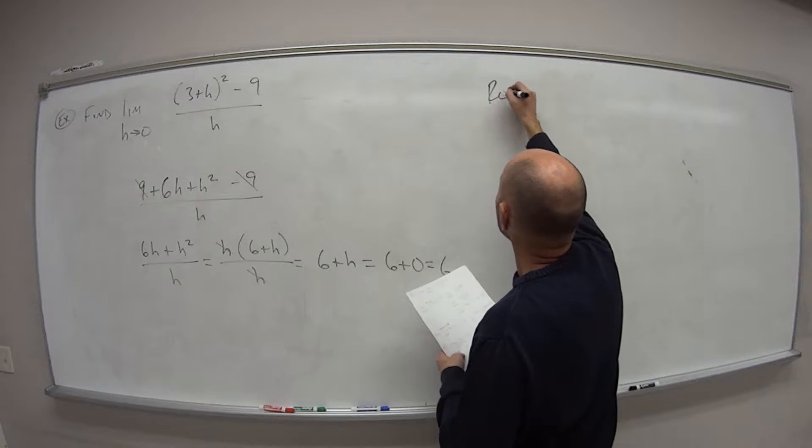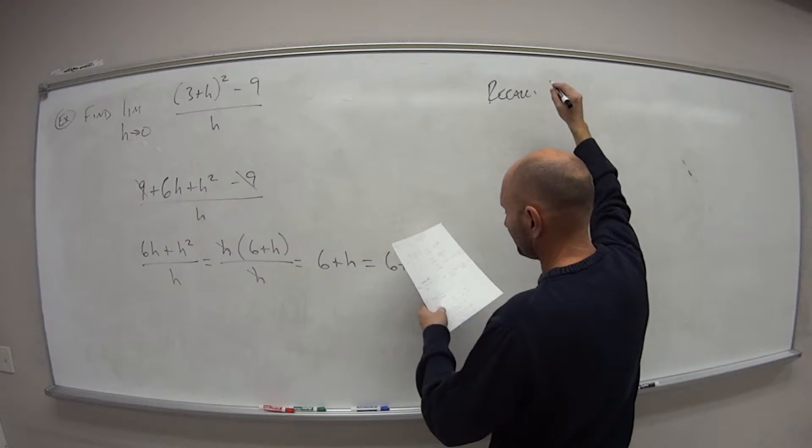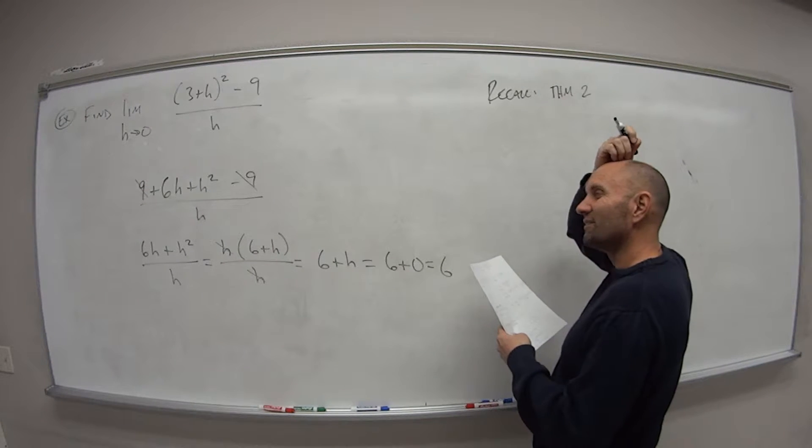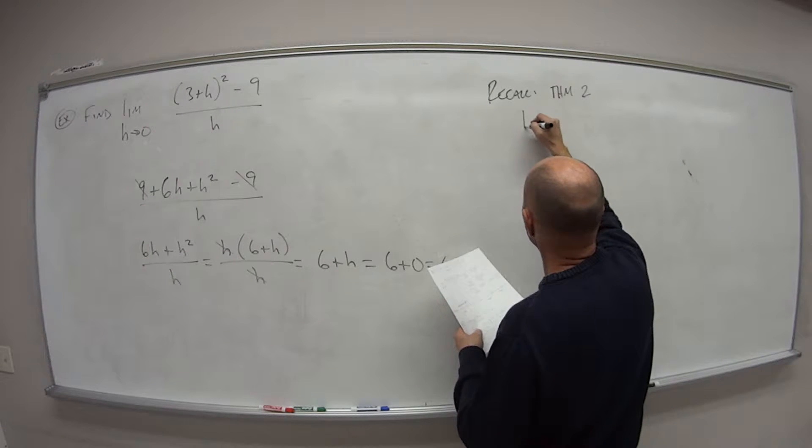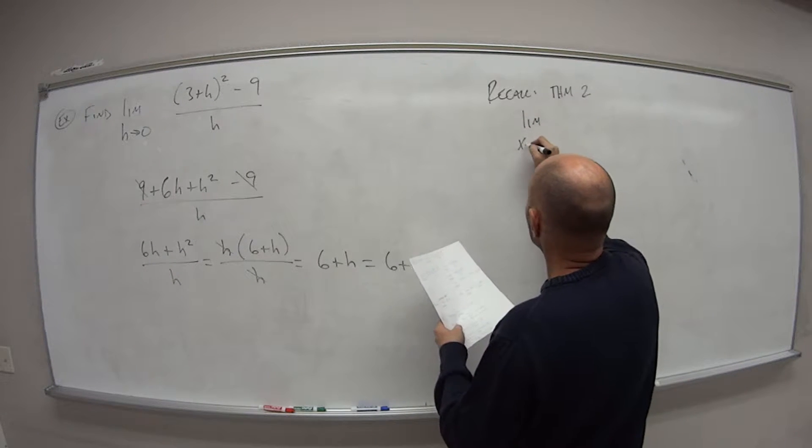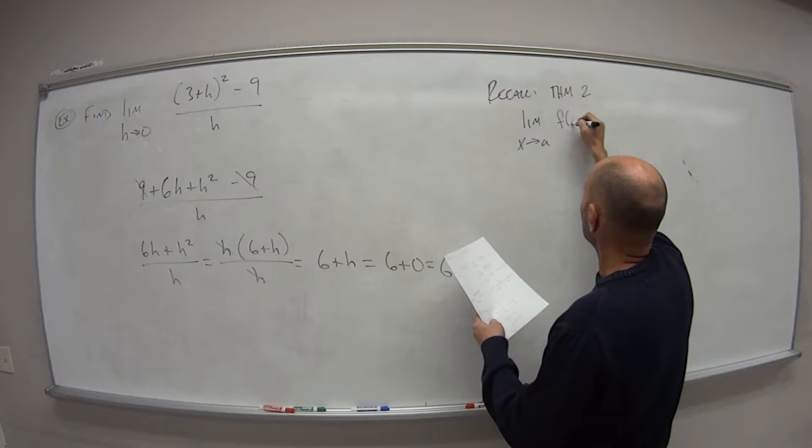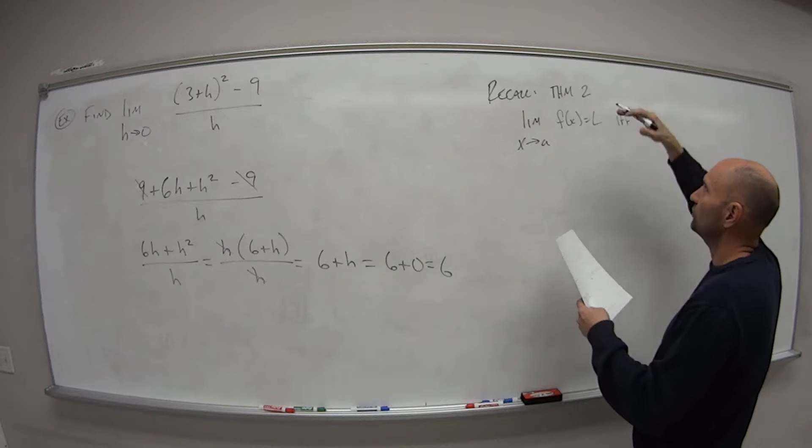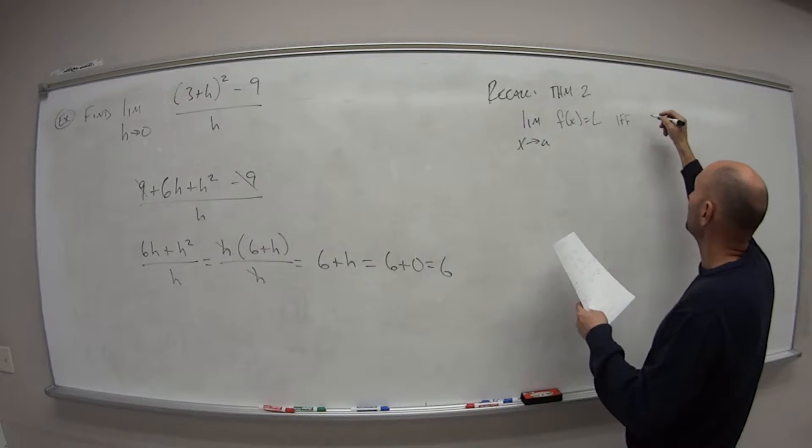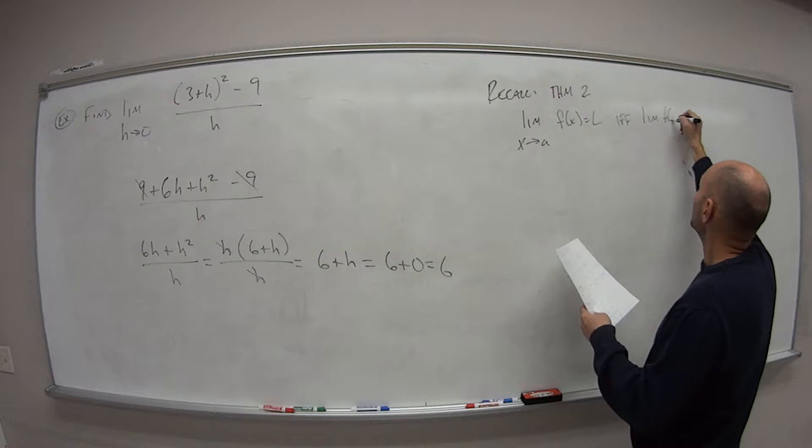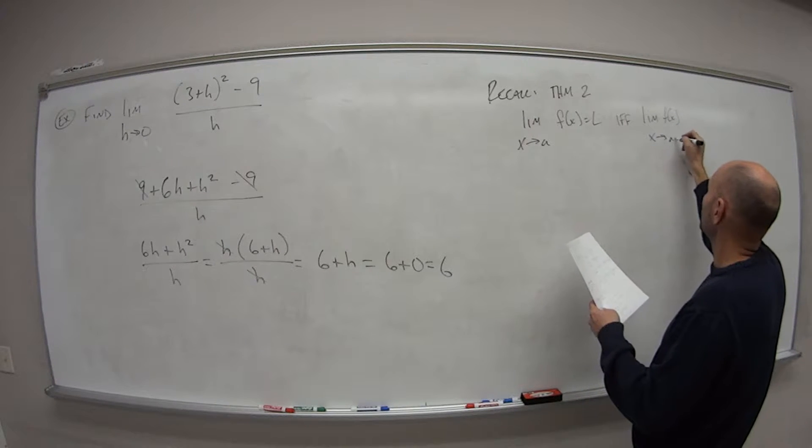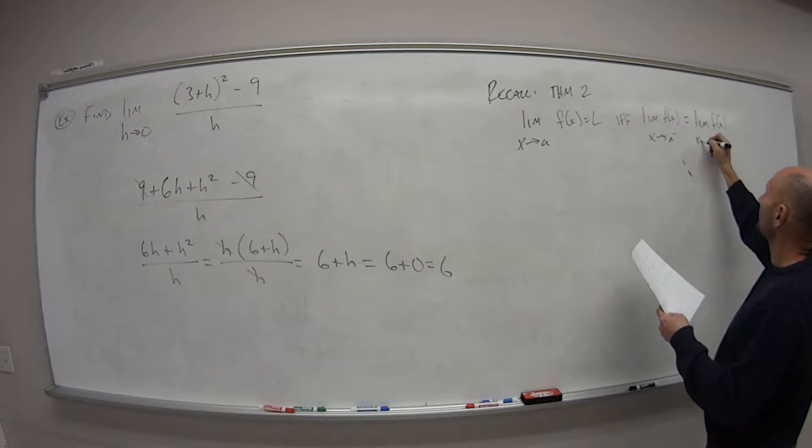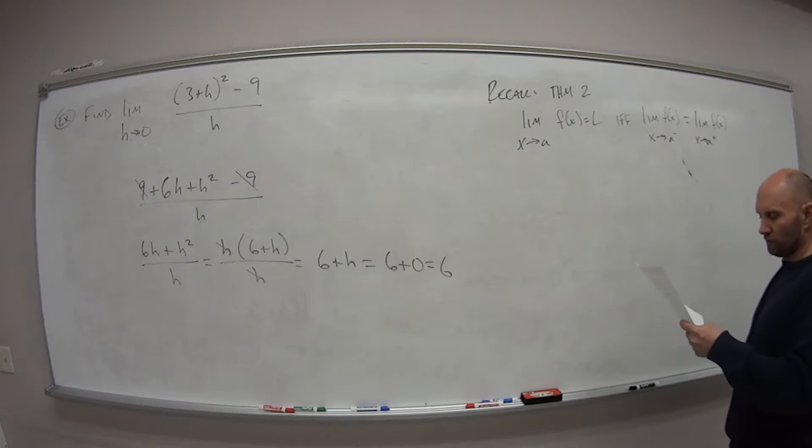So recall, this was theorem 2. I don't know if I did define it as theorem 2. Hopefully I did. Which said that the limit as x approaches a of f of x is equal to l if and only if, and I don't think I call it theorem 2, but we'll call it theorem 2 now. So if and only if the limit of f of x as x approaches a from the left side is equal to the limit of f of x as x approaches a from the right side.